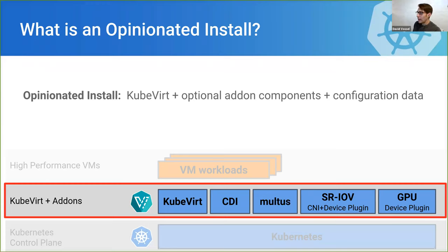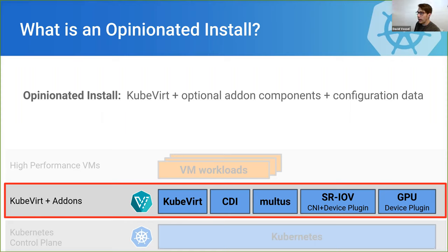An opinionated install of KubeVirt is the KubeVirt core plus any additional add-on components plus configuration data that binds all these components together. With an opinionated install, we enable a specific set of features and workflows to target specific use cases. For example, an install with KubeVirt plus Multus plus an SR-IOV device plugin would be an opinionated configuration optimized for use cases where hardware GPUs and network devices are needed.